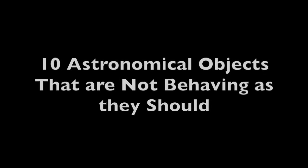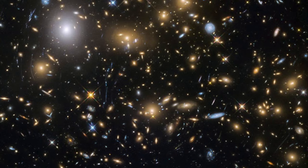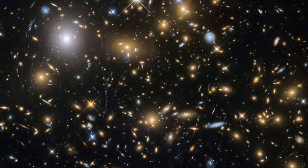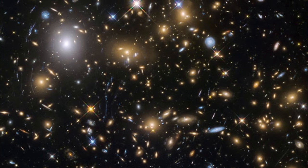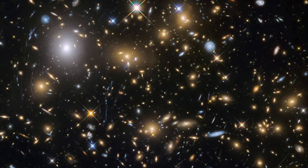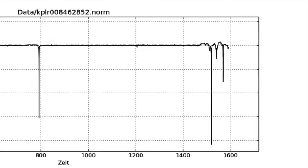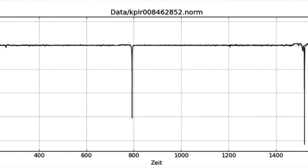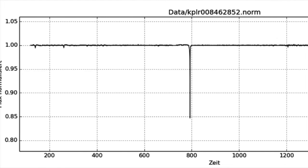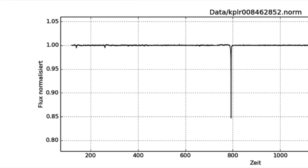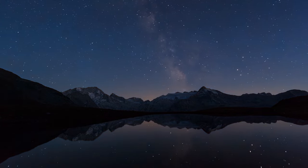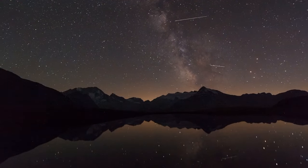On this channel, a common theme is coverage of astronomical objects that should not behave as they do. These include the usual suspects, such as the Tabby's star and the transuranic elements apparently in it, and the mysteriously dipping star KIC 8462852. But there are a number of such objects that I've never covered or only briefly touched on, and a few that are new discoveries. So here are 10 astronomical objects that are not behaving as they should.